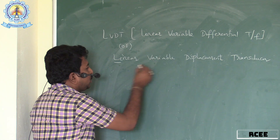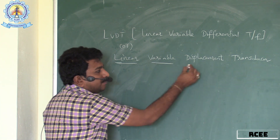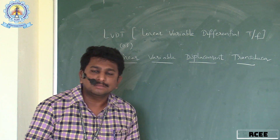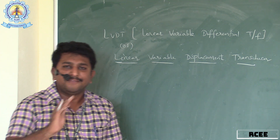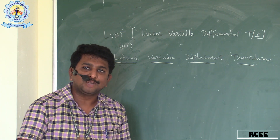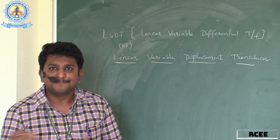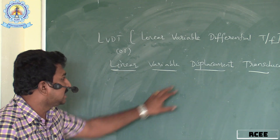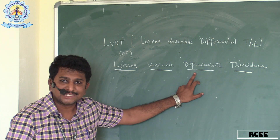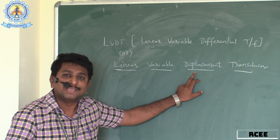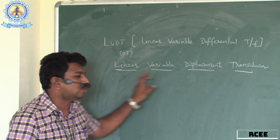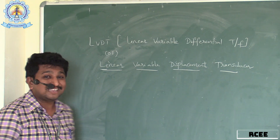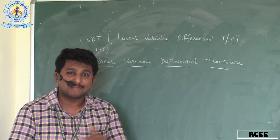As the name 'Linear Variable Displacement Transducer' shows, and as per the definition of a transducer — converting physical quantity to electrical quantity — the type of physical quantity given as input here is displacement. Displacement is the physical quantity being measured using LVDT.